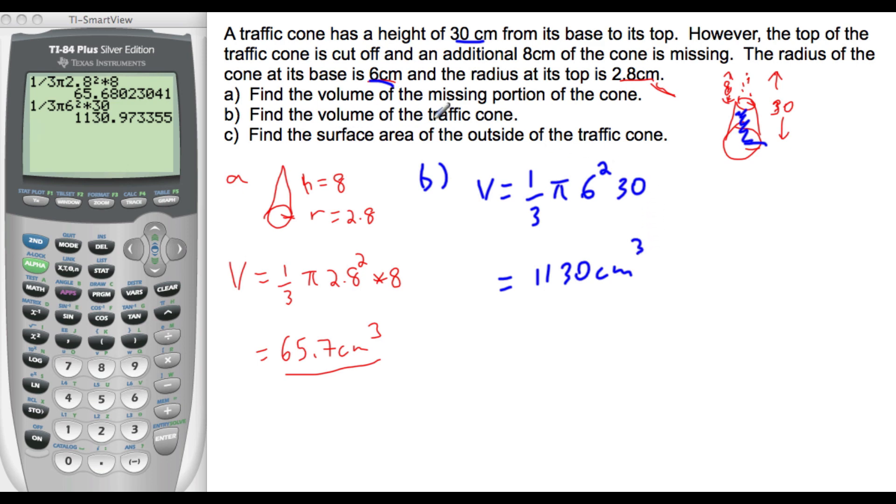We only want the volume of the cone, so we want to take this number and subtract 65.7, so that we get the volume that we're interested in.